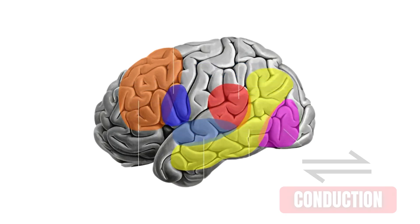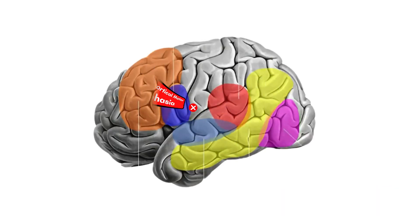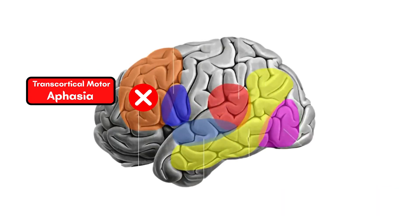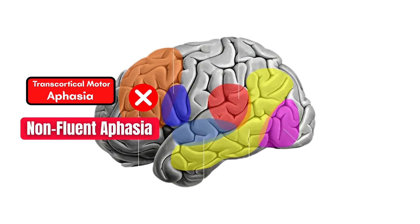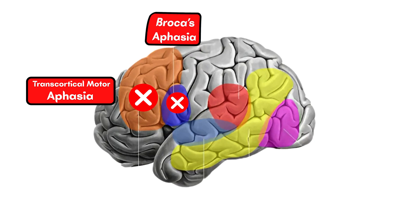If the brain lesion has involved the transcortical motor area, it is called transcortical motor aphasia. It is also called non-fluent aphasia, characterized by difficulty initiating and producing speech. If the brain lesion has involved Broca's area, it is called Broca's aphasia, which is very common. In this, there is difficulty in the articulation of speech.